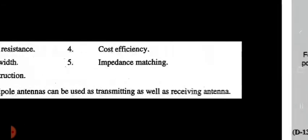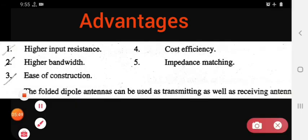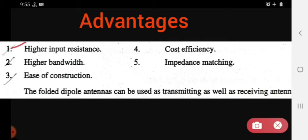The advantages of the folded dipole antenna are: first, higher input resistance; second, higher bandwidth; third, ease of construction; fourth, cost efficiency; and fifth, impedance matching. Additionally, the folded dipole antenna can be used for both transmitting and receiving — it can be used as a transmitter as well as a receiver.